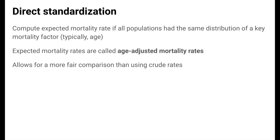Direct standardization is one way for us to improve on crude rates. When using this technique, we compute expected mortality rates for all populations being compared if these populations had the same distribution of a key factor influencing mortality — usually age. If populations have different age distributions, then we would automatically expect differences in mortality simply due to age. So in standardization, we assume that all populations being compared have the same age distribution, and we compute expected mortality rates under this assumption.